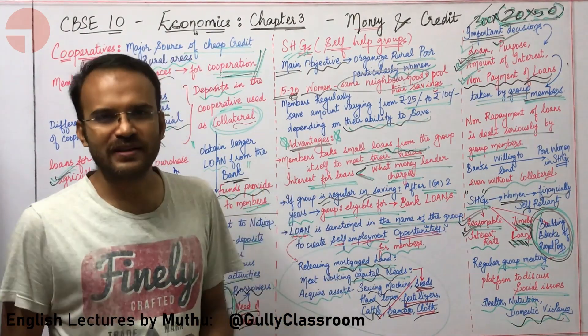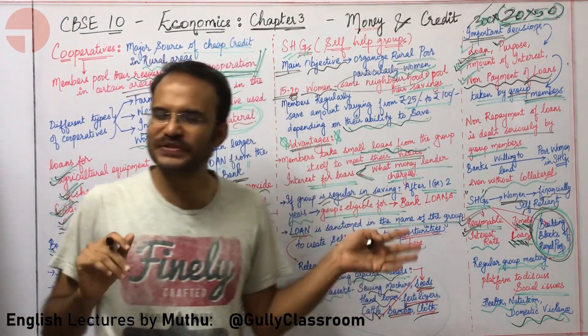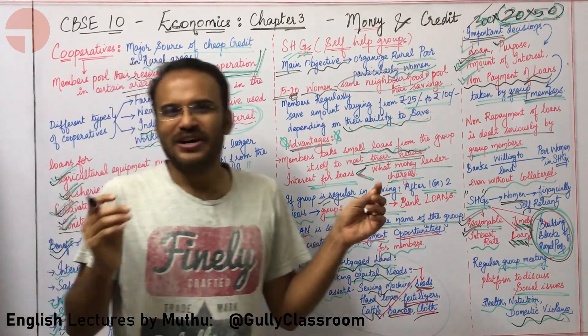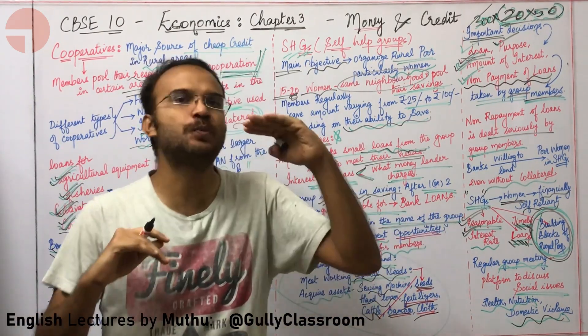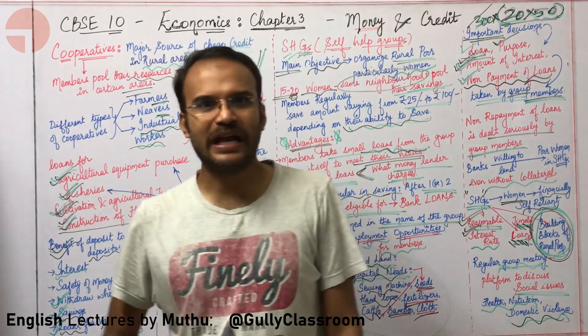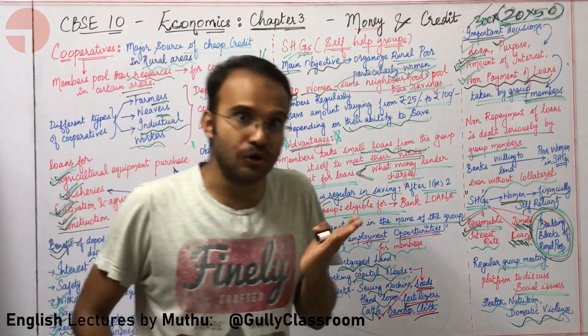That covers cooperatives and self-help groups. Are you able to understand the difference between the two? Are you happy with the speed of the class, or would you like me to slow down or speed up? All kinds of comments are invited and appreciated.